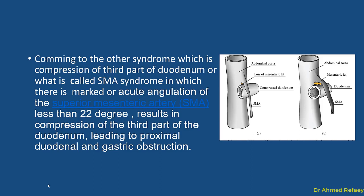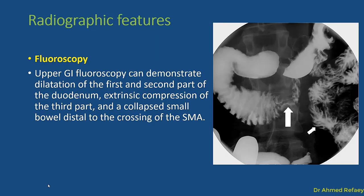The second syndrome is Superior Mesenteric Artery Syndrome, which involves compression of the third part of the duodenum between the aorta and the superior mesenteric artery. When the angle becomes less than 22 degrees, it results in compression of the third part of the duodenum with marked proximal dilatation of the duodenum and stomach. The patient typically presents with signs and symptoms of duodenal obstruction. On upper GI fluoroscopy, dilatation of the first and second parts of the duodenum is demonstrated, with collapse of the small bowel loop distal to the area of the superior mesenteric artery.